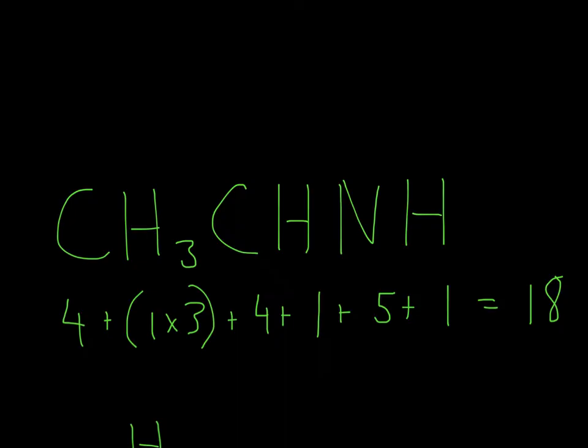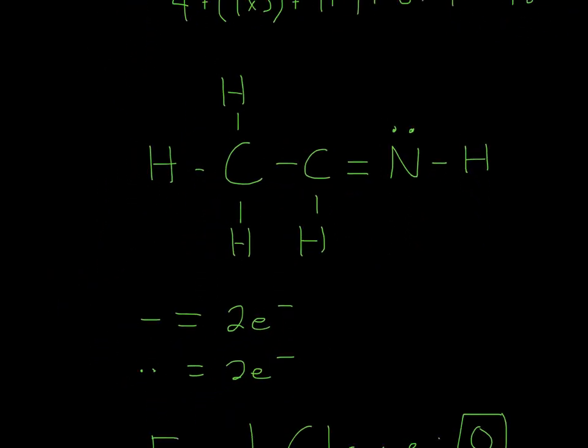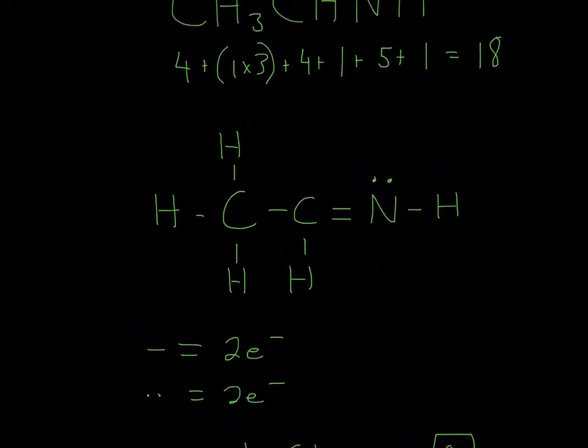And then usually the trick to these kind of Lewis structures is to draw the carbons together and then attach the other element. In this case, it'd be nitrogen, and then attach all your hydrogens. So it'll look like this. It's a little bit of trial and error.